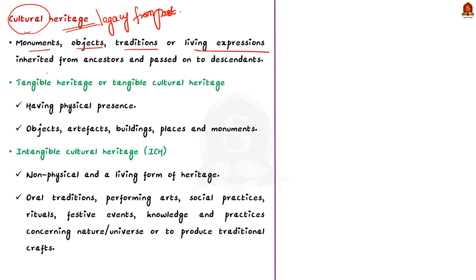What is intangible cultural heritage? Tangible means something perceptible by touch with a physical presence. Intangible means unable to be touched or lacking physical presence. Tangible cultural heritage includes objects, artifacts, buildings, places and monuments. Intangible cultural heritage, by contrast, refers to heritage that is non-physical but is a living form of heritage — including oral traditions, performing arts, social practices, rituals, festive events, knowledge and practices concerning nature, and skills to produce traditional crafts.